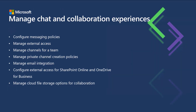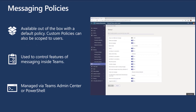Let's start with messaging policies. Messaging policies are available out of the box with a default set of recommendations. This default policy will apply to any users that you haven't scoped a specific custom policy to. You can use a messaging policy to control features of messaging inside Teams. You can manage these messaging policies in two places — you can create, delete, assign, and amend them in the Teams admin center, and you can do exactly the same thing via PowerShell.